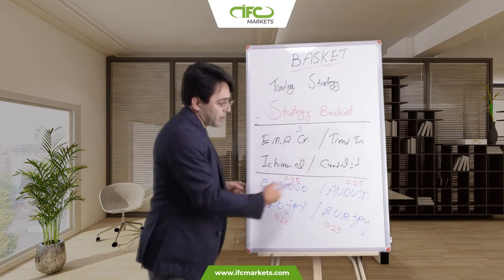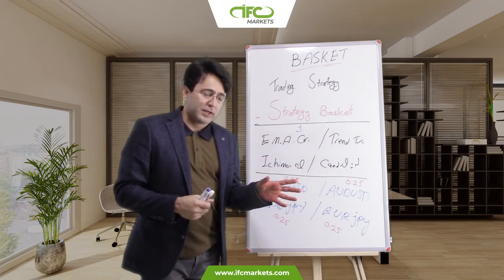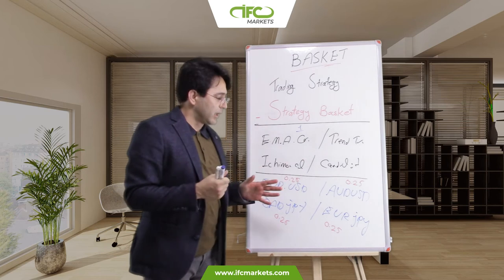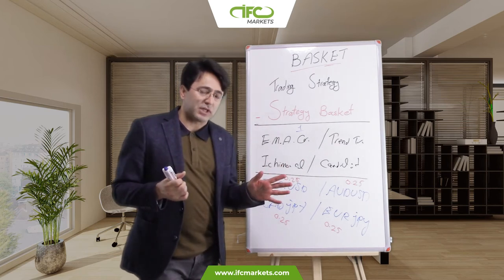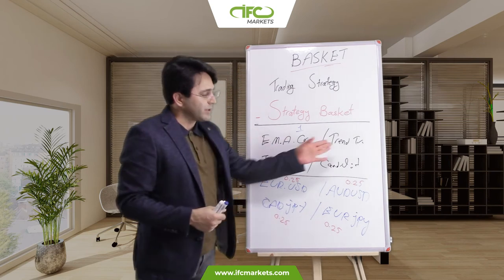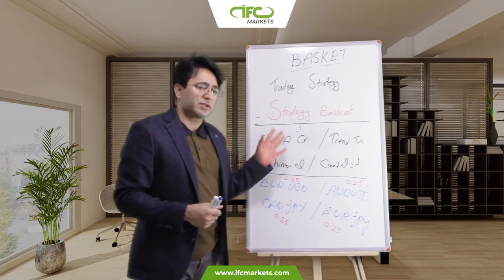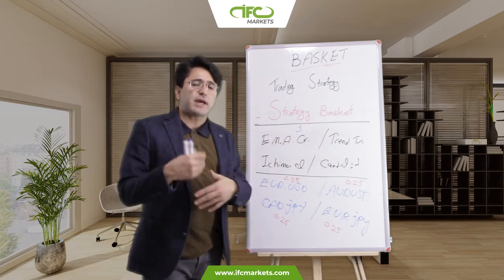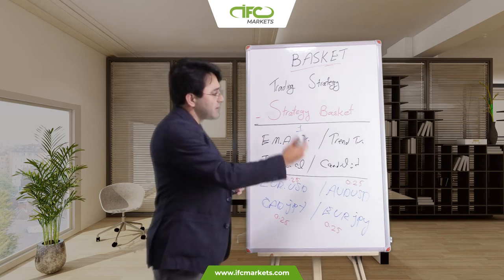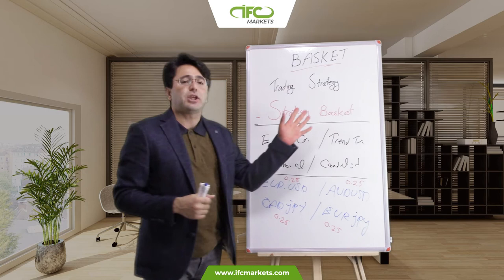These symbols are from different time zones and different economies, so they move in different directions and are not following the same things. Even if they follow the same way, you have different strategies — meaning you have already decreased your risk. This is the strategy basket.